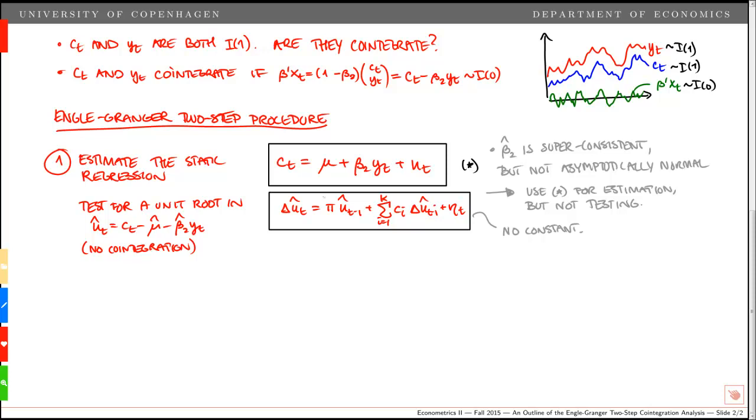For a unit root, we can test the hypothesis of a unit root as a test of the null that pi is equal to zero. So this is the test for a unit root, or alternatively, a test for no cointegration. If there's a unit root in the estimated residuals from the static regression, it implies that ct and yt are not cointegrated. We use the standard t-ratio as our test statistic, the estimated coefficient pi divided by the standard error pi hat. Under the null, this follows a Dickey-Fuller distribution.